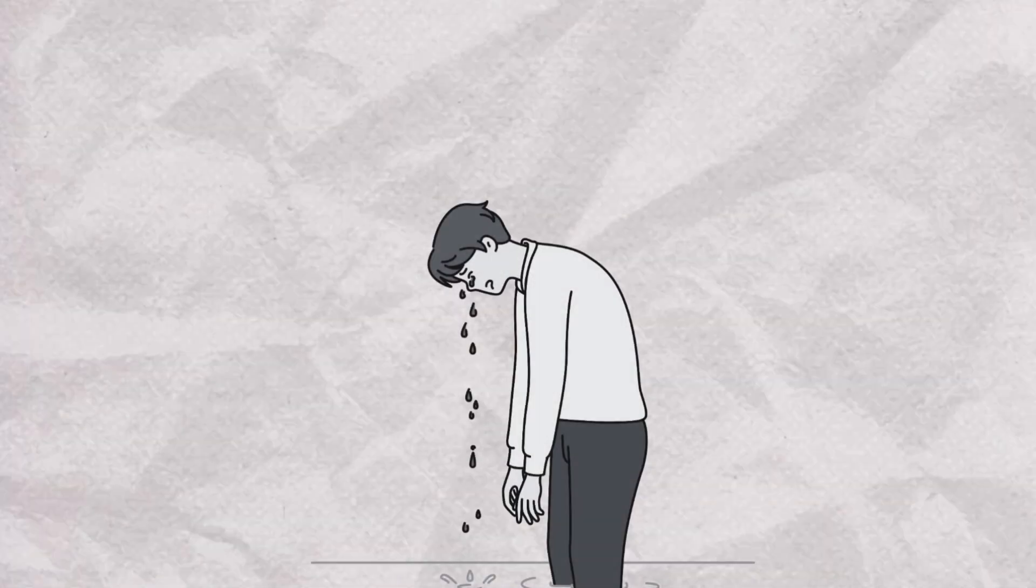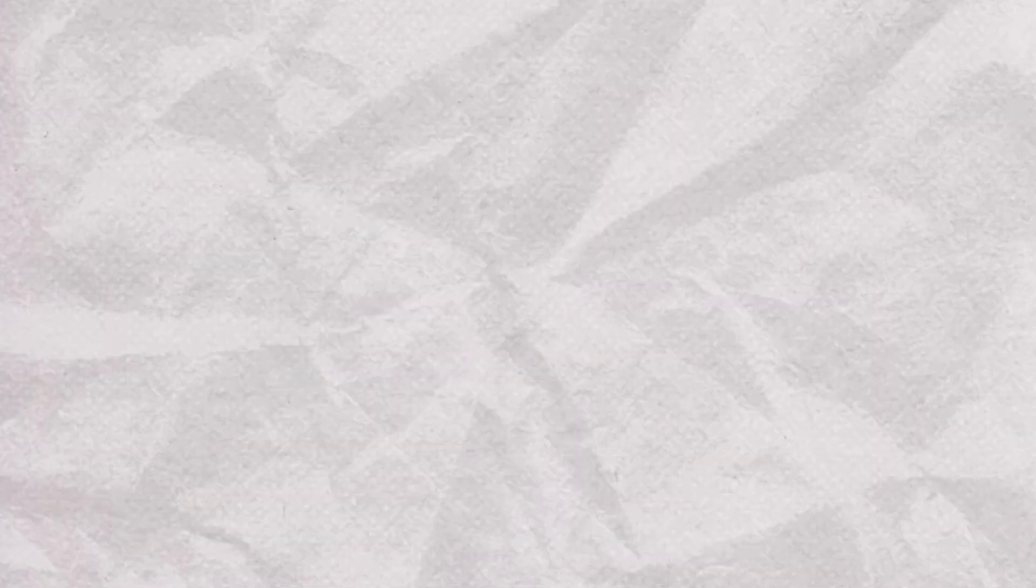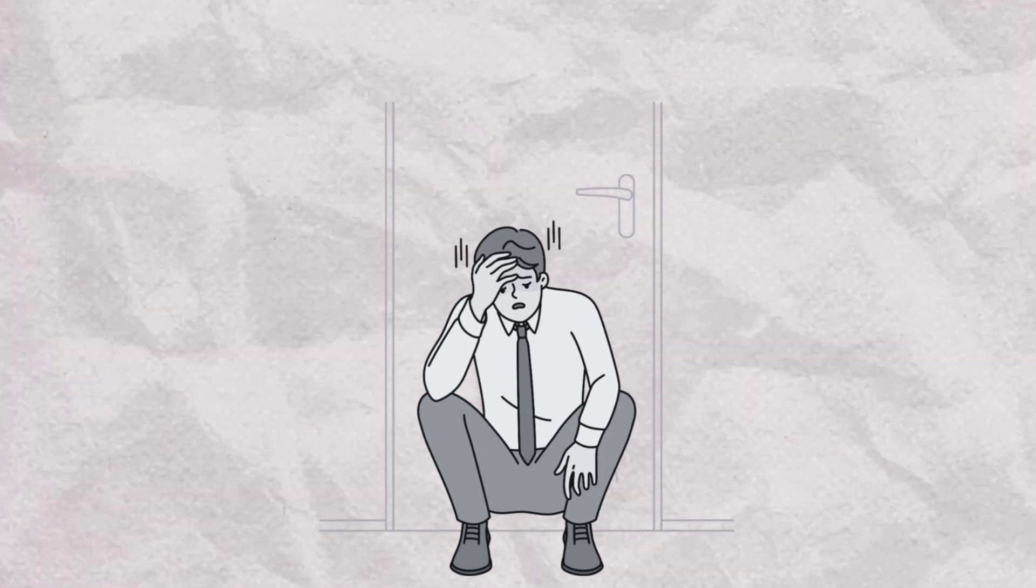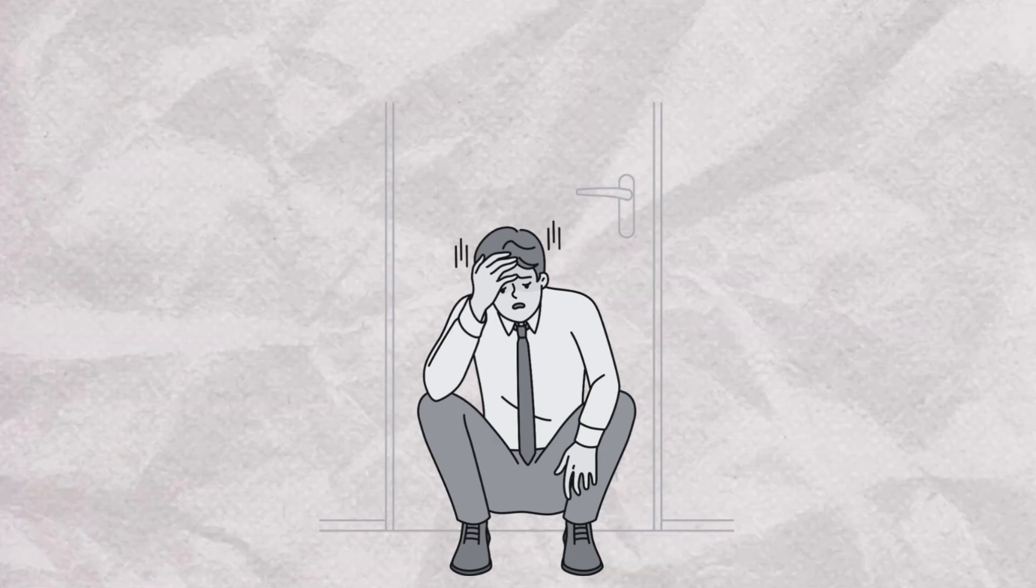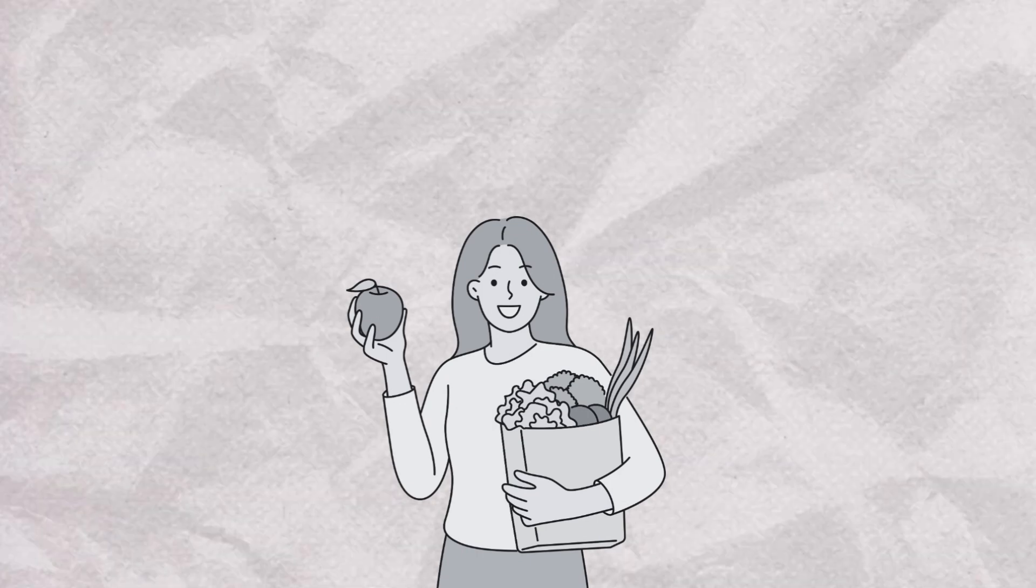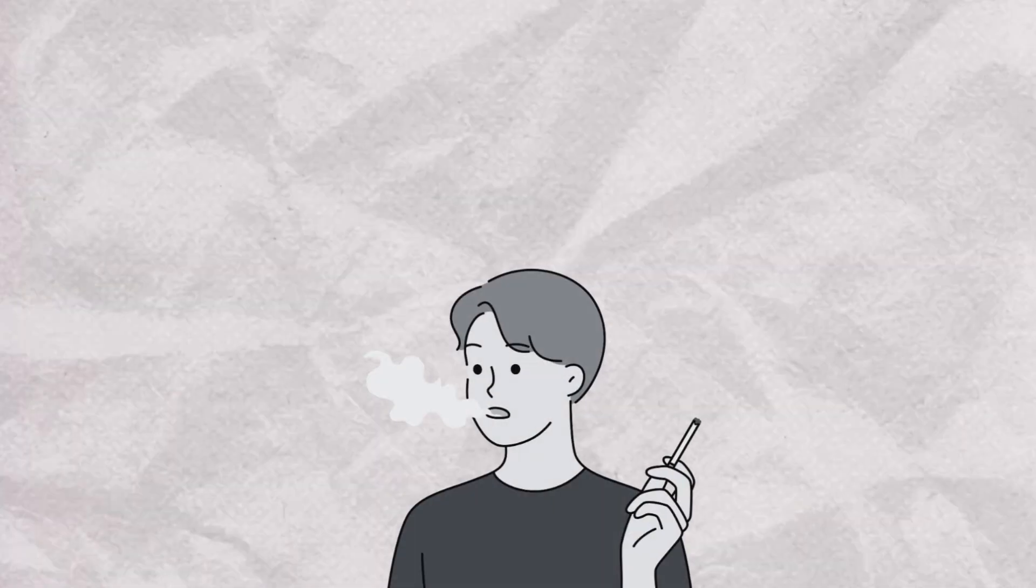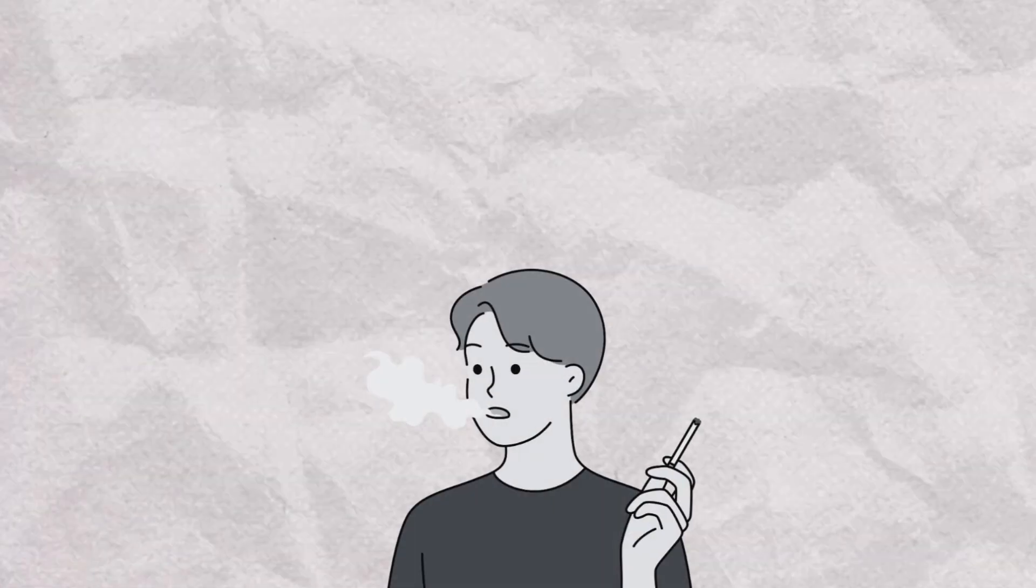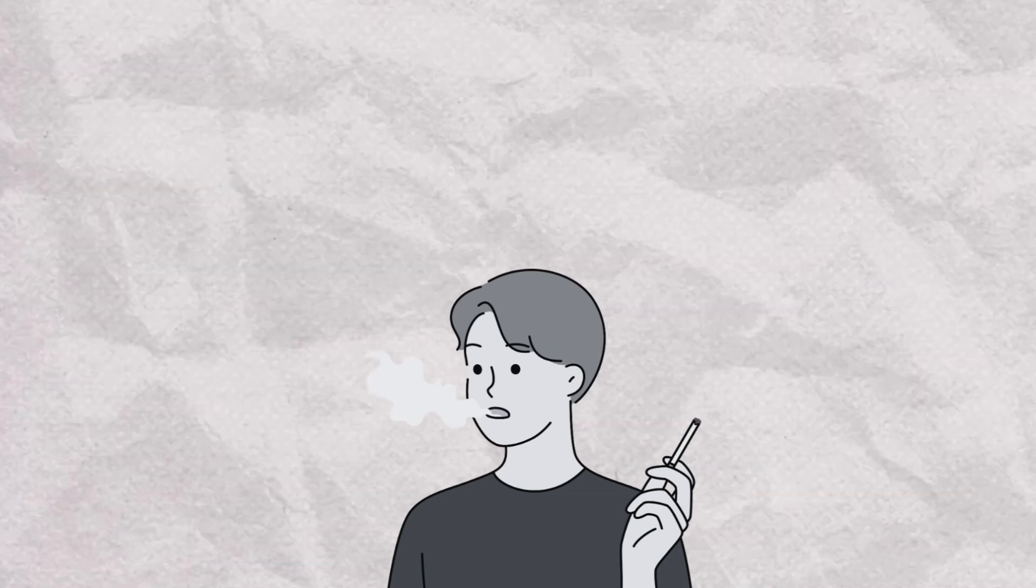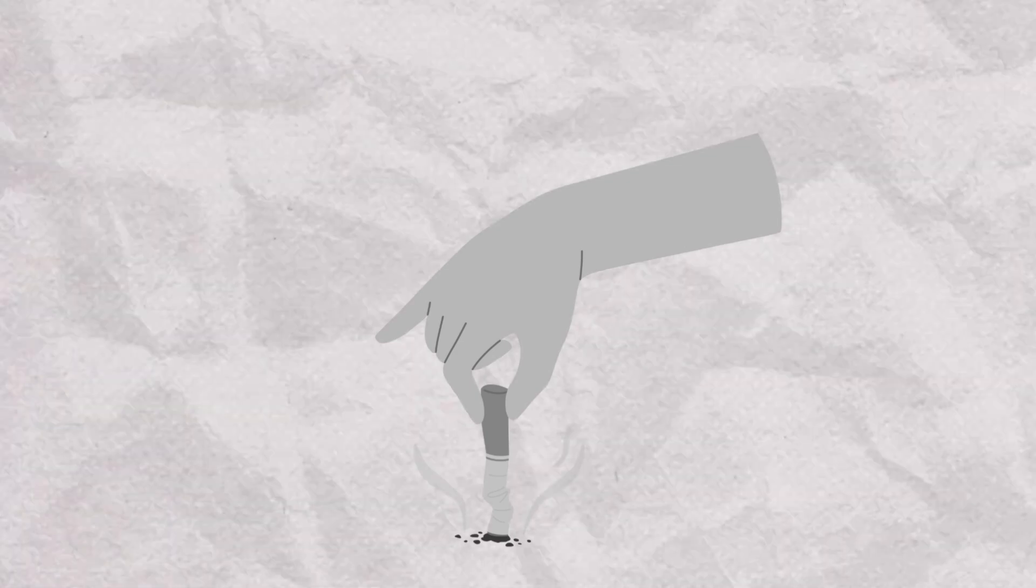This concept, introduced by psychologist Leon Festinger in 1957, has profound implications for understanding human behavior and decision-making. For example, consider a person who values healthy living but smokes cigarettes. The conflict between the belief in maintaining health and the behavior of smoking creates cognitive dissonance. To reduce this discomfort, the person might change their behavior by quitting smoking or alter their belief by rationalizing that smoking helps them manage stress, which they perceive as a health benefit.